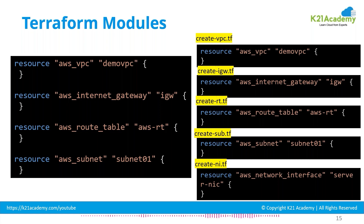For example, your VPC has one configuration file, internet gateway has one file, routing table has one file, subnet has one file. But if somebody wants to implement an entire project with networks, storage, EC2 instances, load balancers, database servers, high availability with primary and secondary — you end up creating one file for primary, one for secondary, repeating the same thing multiple times.